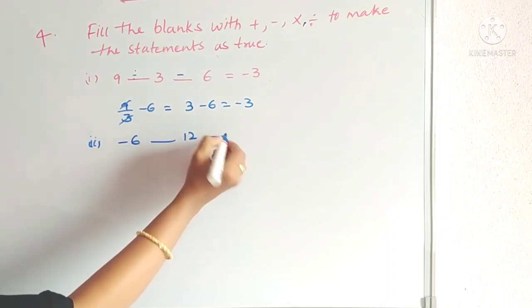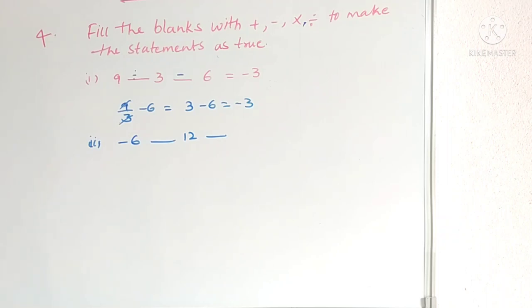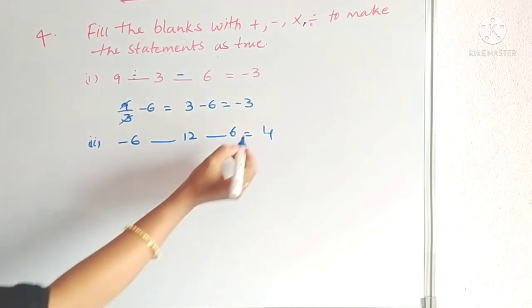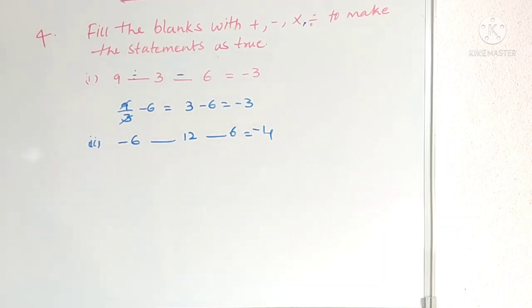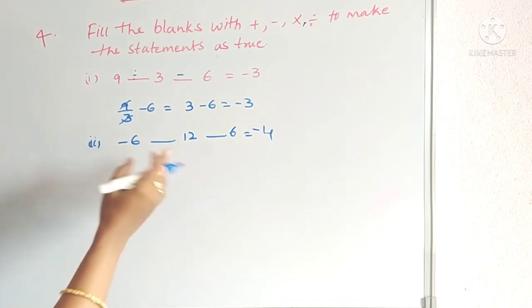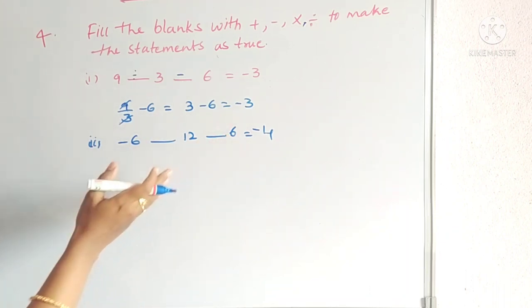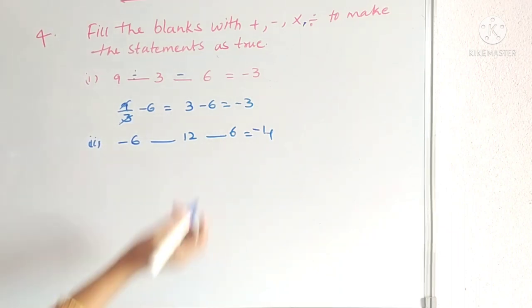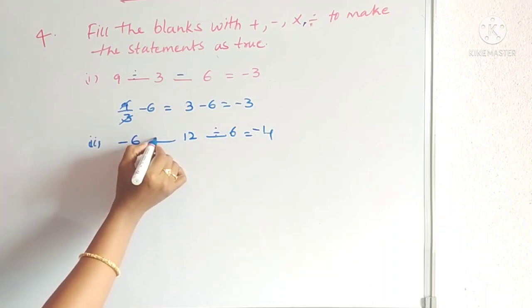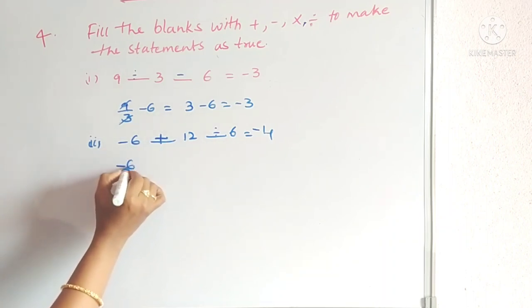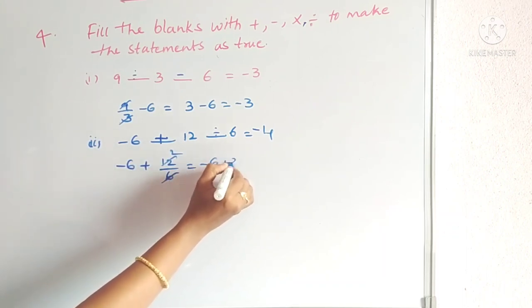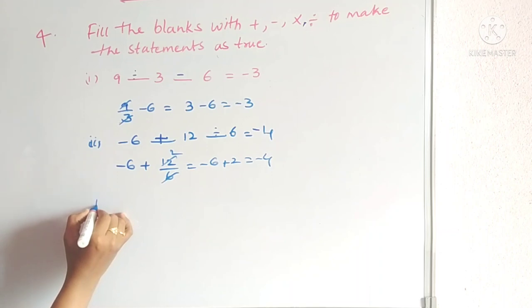Second one: −6 __ 12 __ 6 = −4. We need to get 2 from 12 and 6: 12 ÷ 6 = 2. Then −6 + 2 = −4. So the symbols are ÷ and +. Answer: −6 + 12 ÷ 6 = −4.